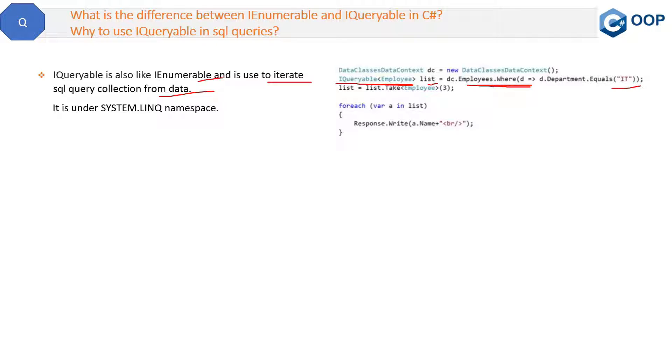then that filtered result will be saved in this list. So this is the code. Now the question is, why do we prefer IQueryable in SQL queries? Why can't we use IEnumerable and why introduce a new concept?